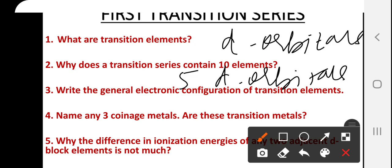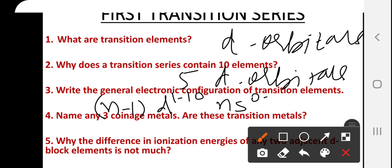Write the general electronic configuration of transition elements. The general electronic configuration is (n−1)d¹⁻¹⁰ ns⁰⁻².